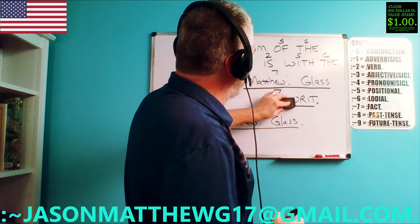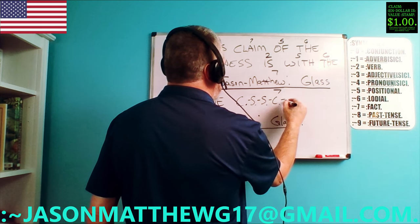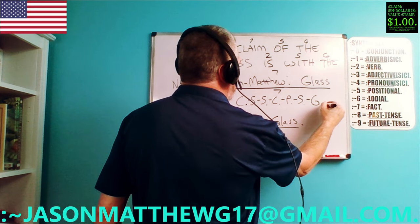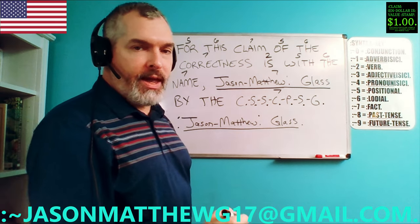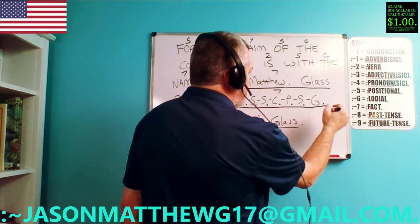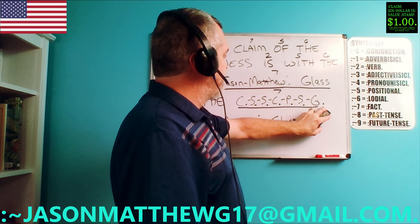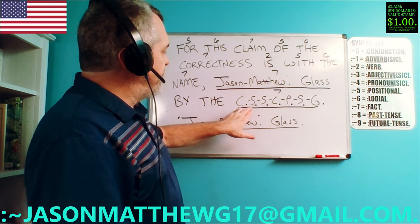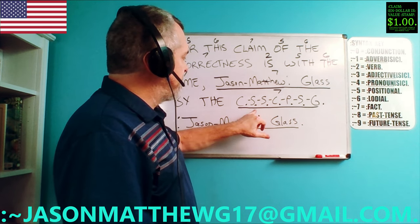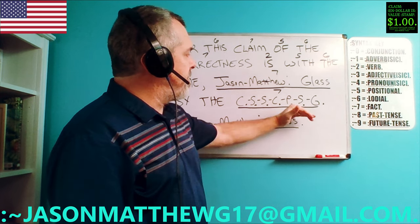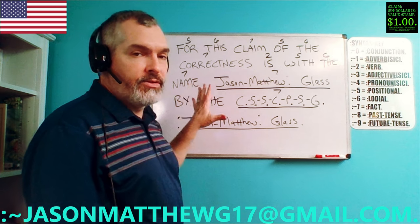Now the sentence is: 'For this claim of the correct sentence structure communication parsi syntax grammar is with the name Jason hyphen Matthew colon Glass by the contract writ.' The abbreviation — C.S.S.C.P.S.G. — means correct sentence structure communication parsi syntax grammar. You see there's a period after C, after S, after S, after C, after P, after S, and after G. But this period after the G is underlined, because if it were not underlined, it would bring the sentence to a stop after that, and then it wouldn't be a sentence. That's why you underline it when it comes in the middle of a sentence, but the final period would not be underlined.